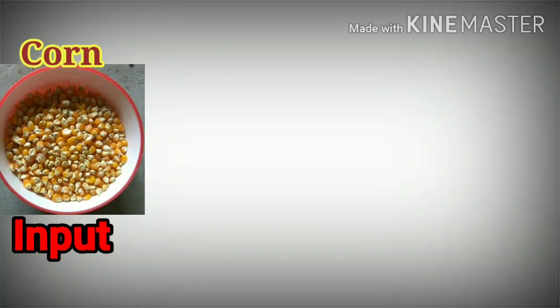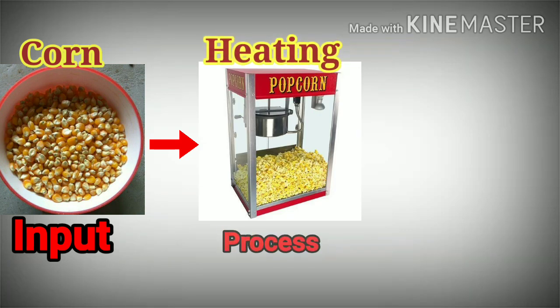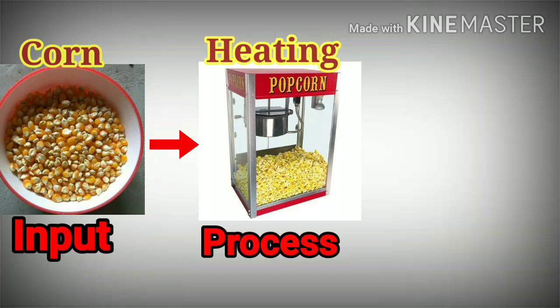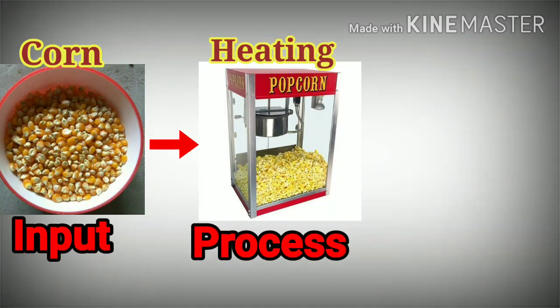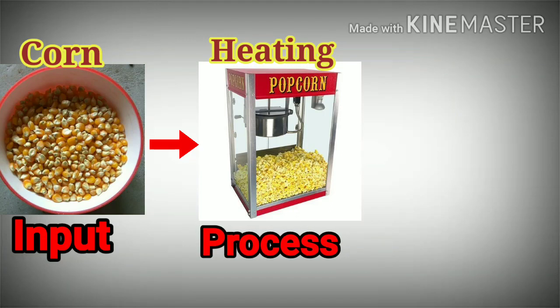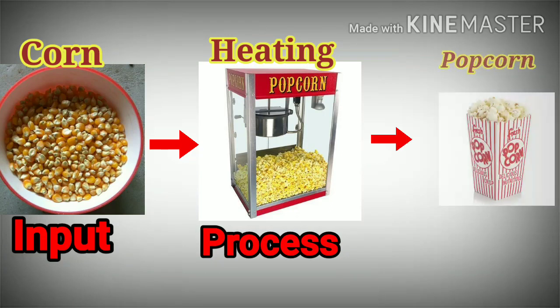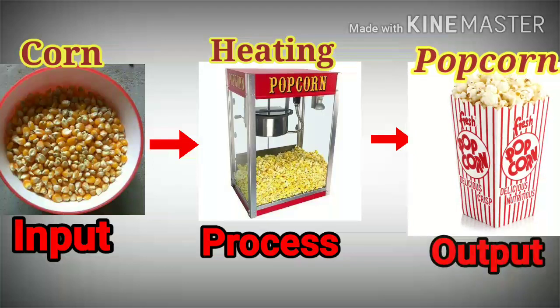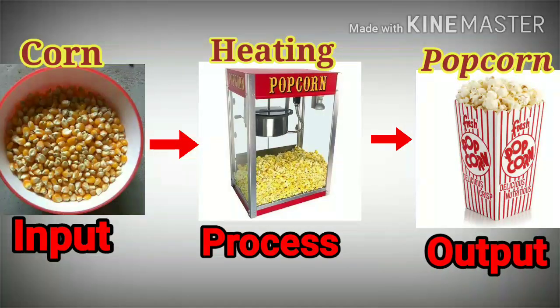Then what do we do? We put the corn into the machine. The machine carries out the process. After some time, what do we get? Yes, we get sweet popcorn — that is the output.